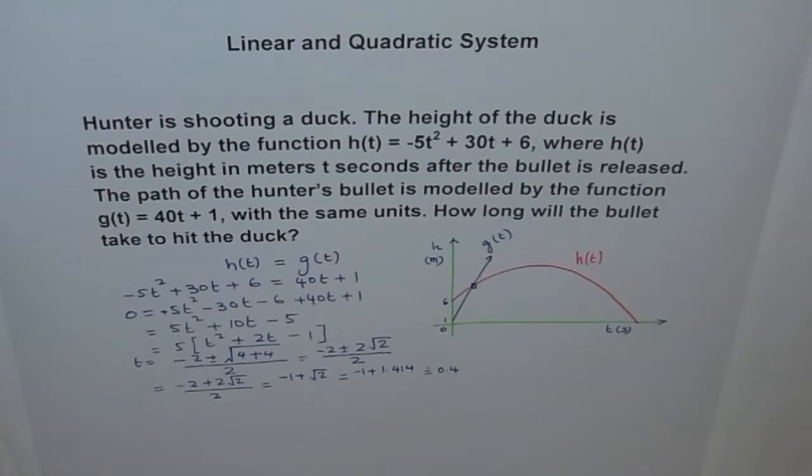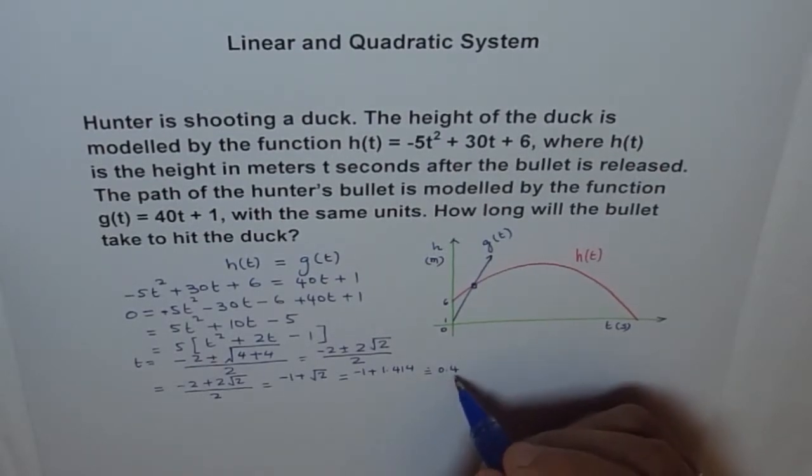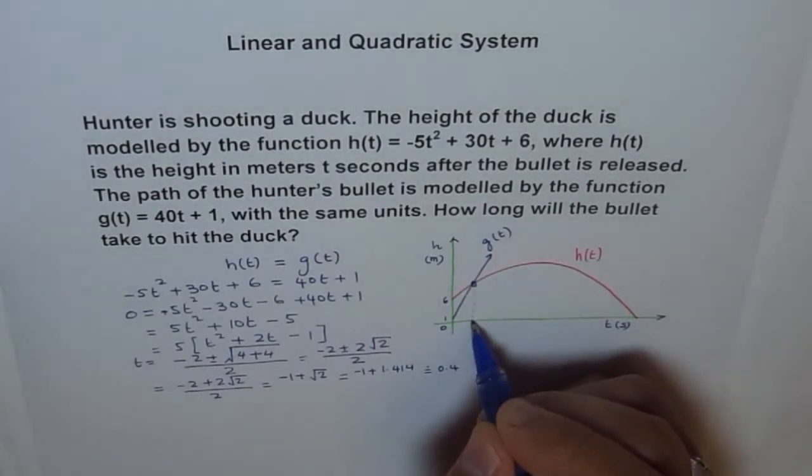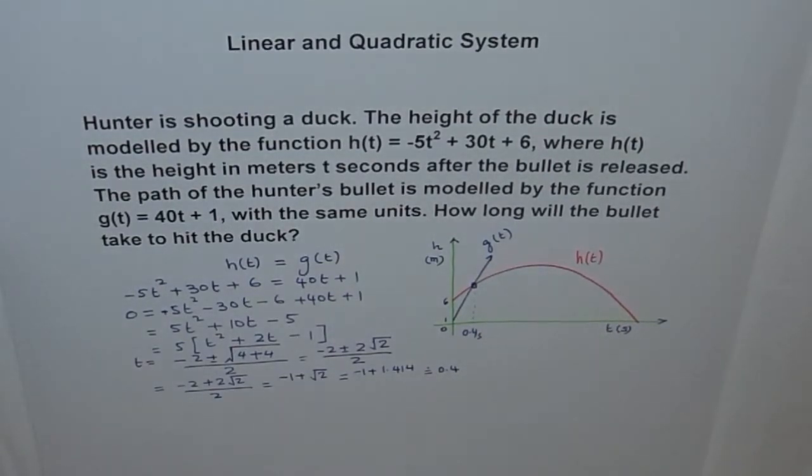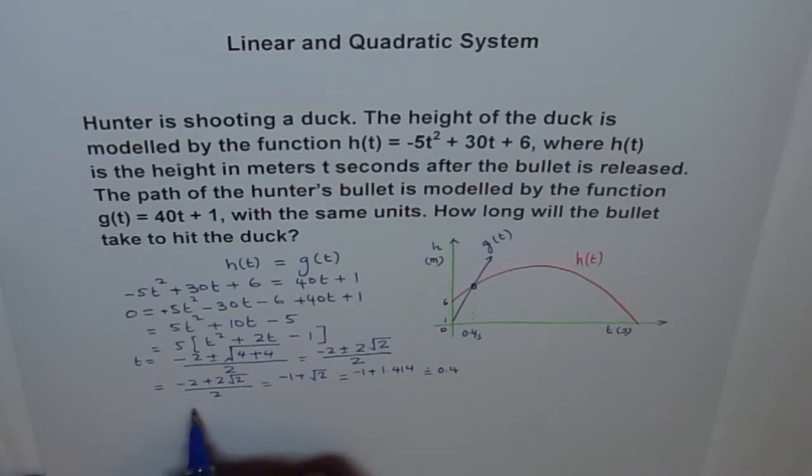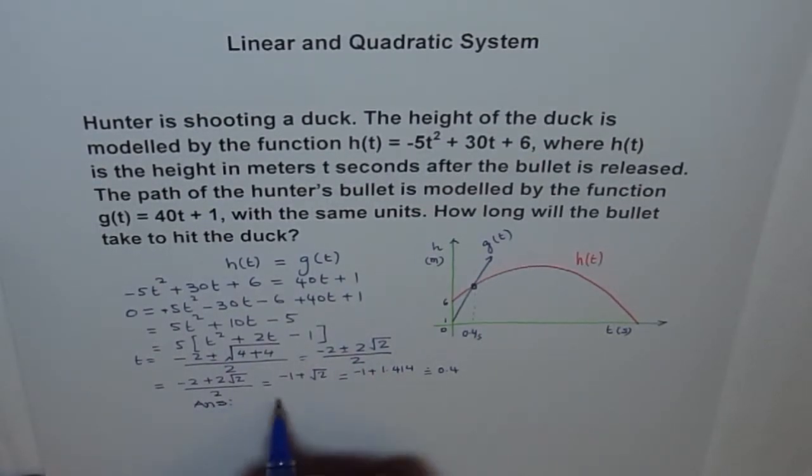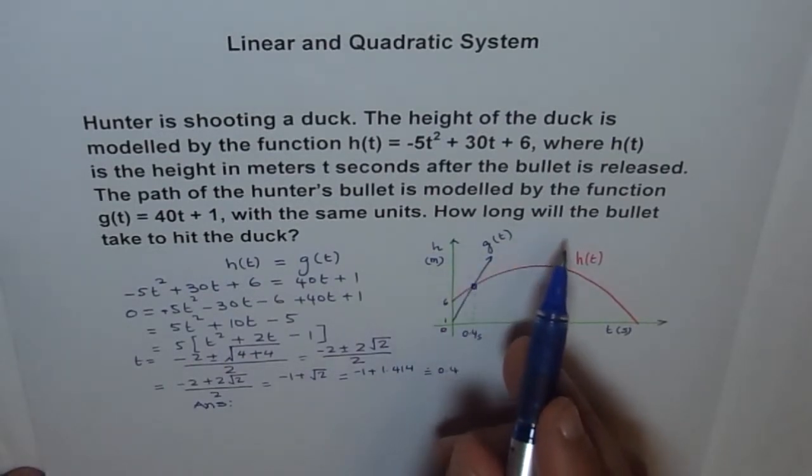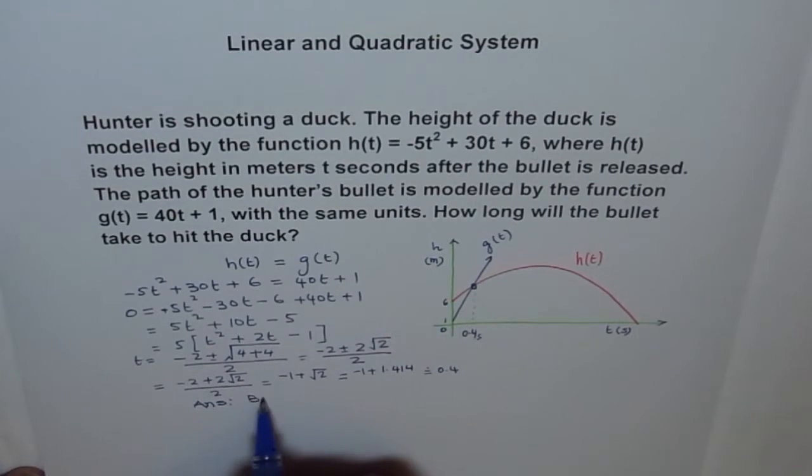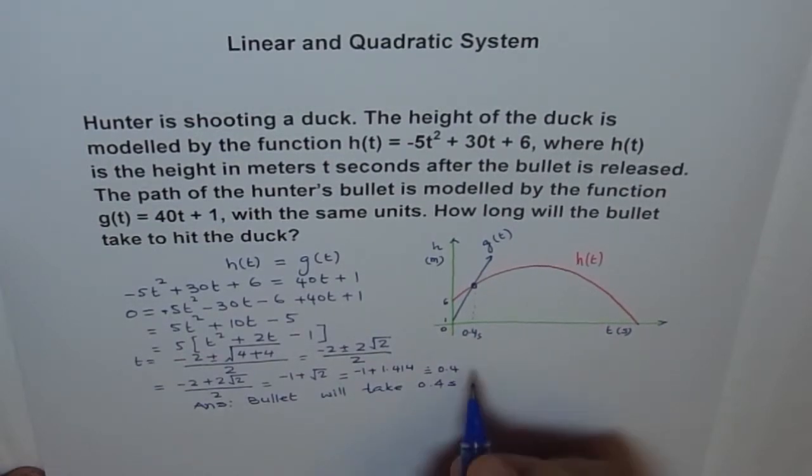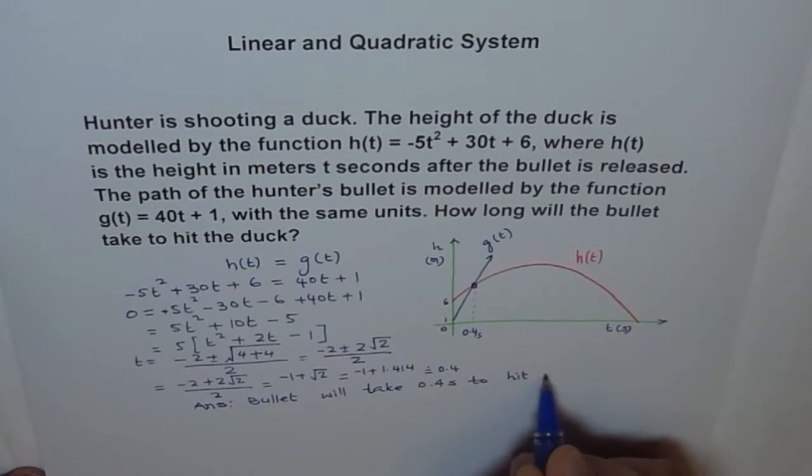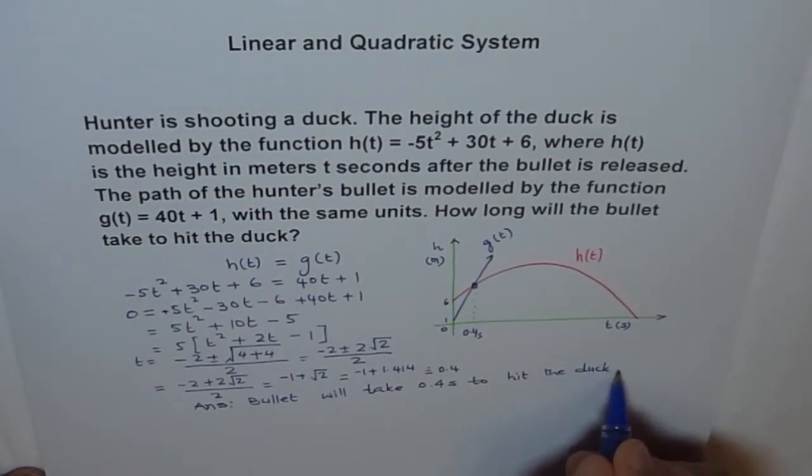Does it make sense? I think it does. Very short time. So the time when it hits will be 0.4 seconds on our graph. That's the kind of solution, and you saw how we did it. So now, we can write that the bullet, answer should always be written in words. So we say answer is, how long will the bullet take to hit the duck? Bullet will take 0.4 seconds to hit the duck.